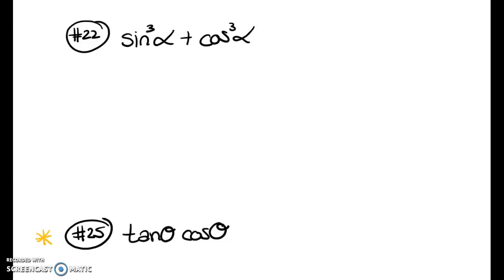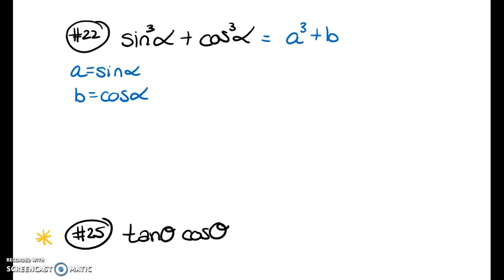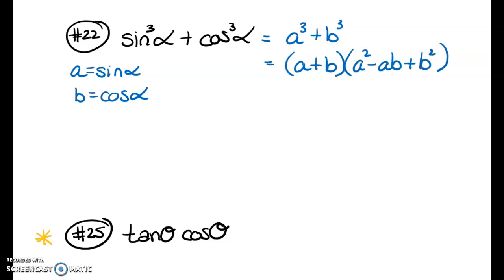For the next example, I'm going to set a equal to sine of alpha and b equal to cosine of alpha. This gives us a³ + b³, which matches one of our factoring formulas from chapter five. That factors into (a + b)(a² − ab + b²).